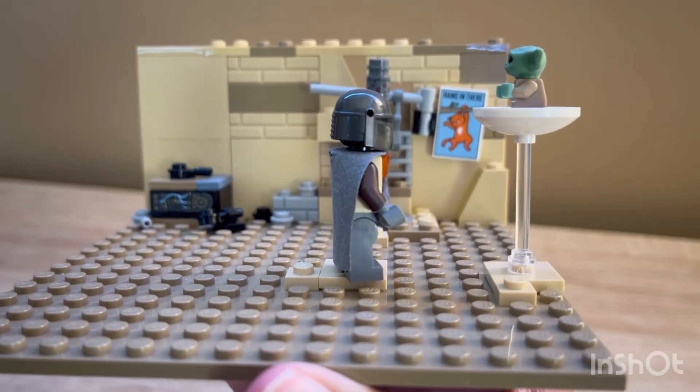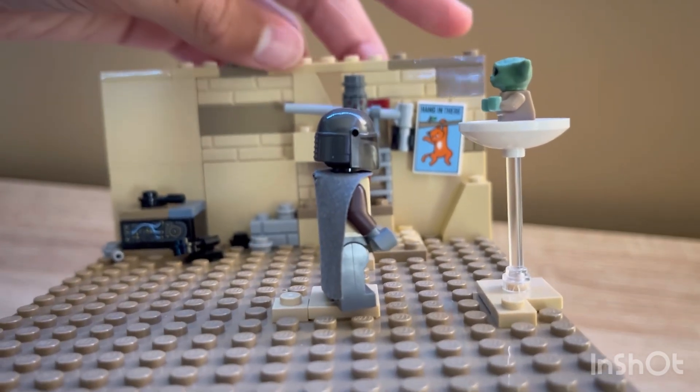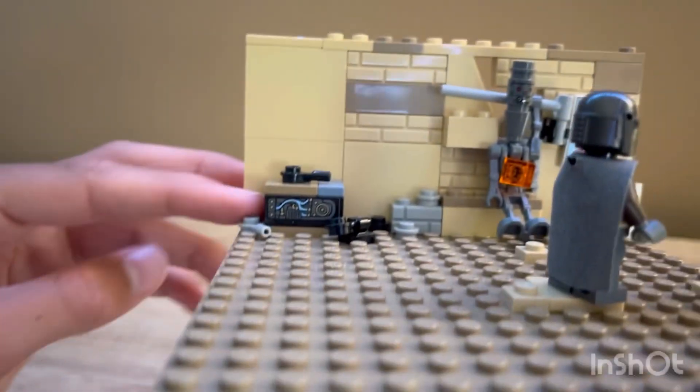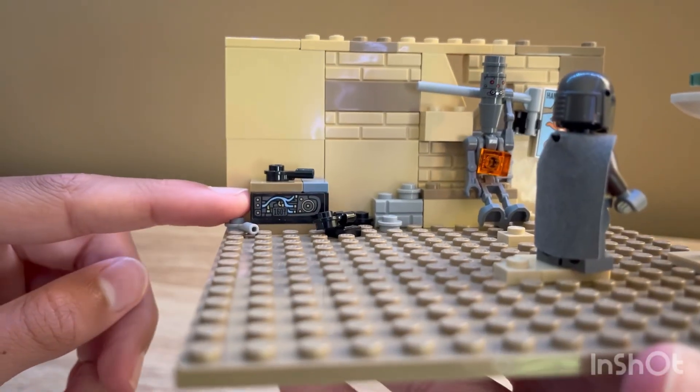I added a lot of detail to the walls like a kitten poster as well as some bricks and other dark tan pieces and I even added some loose parts and a power converter.